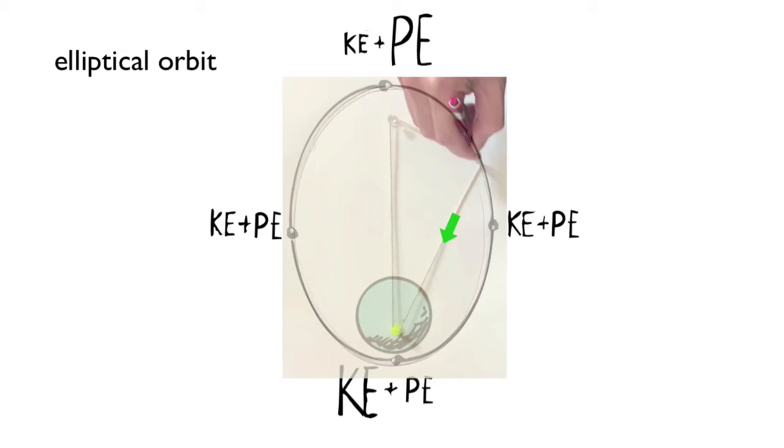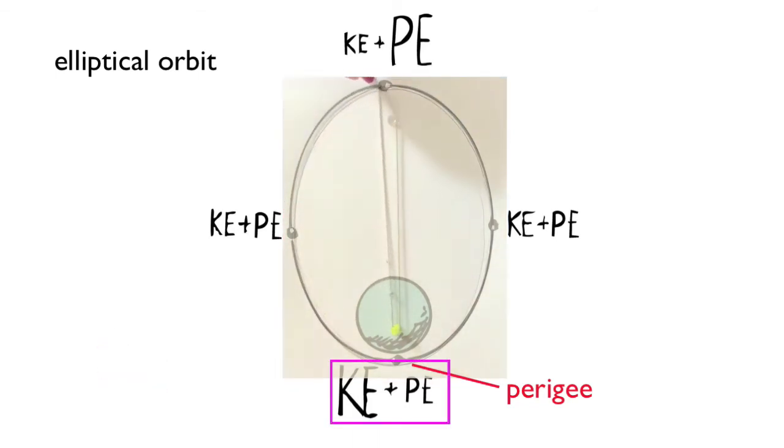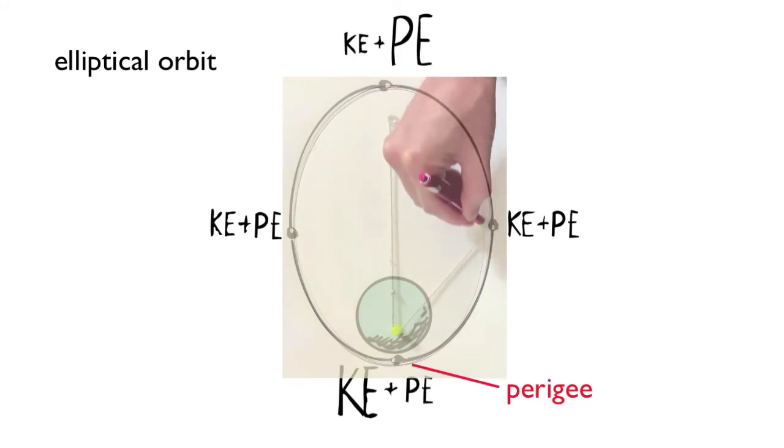Then, when it reaches its closest position, called the perigee, the satellite is moving the fastest. That is, its kinetic energy is maximal, while its potential energy is minimal. All the while, the total energy of that satellite is conserved.